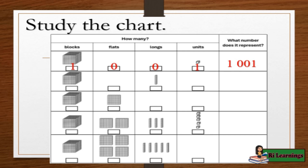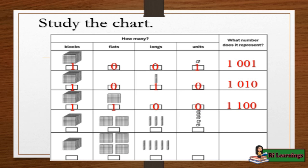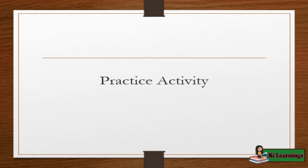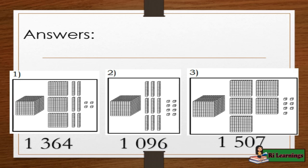Study the chart. Practice activity: Write the number represented by the blocks, flats, longs, and units on a sheet of paper. Answers: 1) 1,364; 2) 1,096; 3) 1,507.